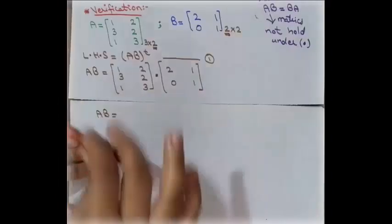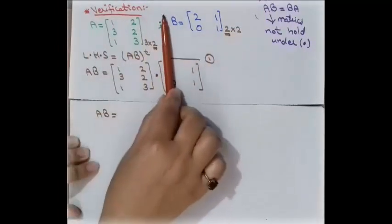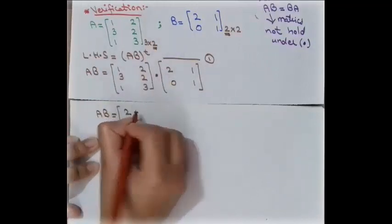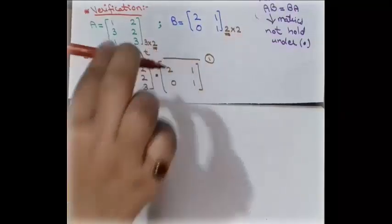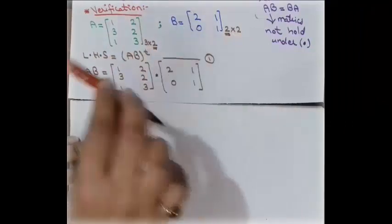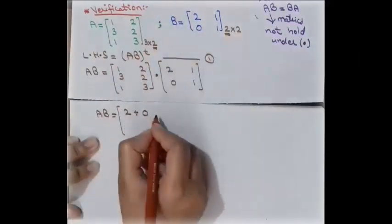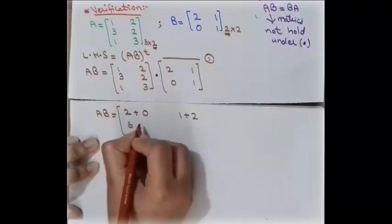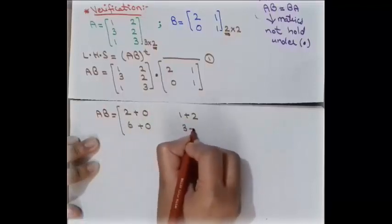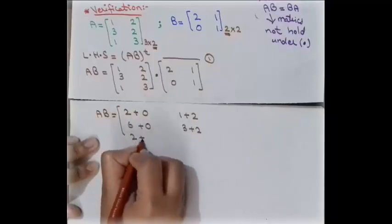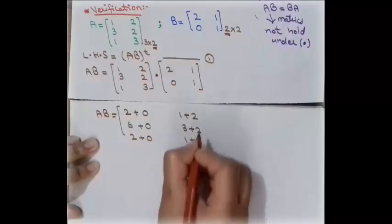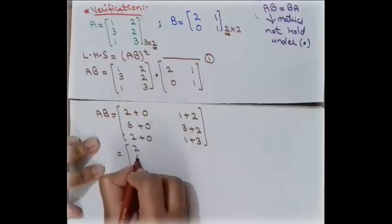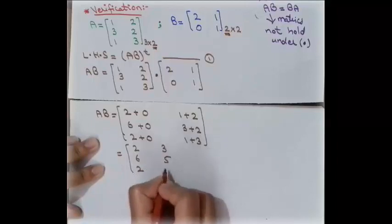To find the product AB, we multiply the first row of A with each column of B. First row times first column: 2×1 + 0 = 2, then fix the row and change the column: 1+2 = 3. Similarly, 6+0 = 6 and 3+2 = 5, then 2+0 = 2 and 1+3 = 4. So the product AB is the matrix [[2,3],[6,5],[2,4]].